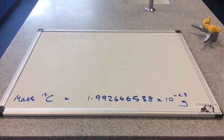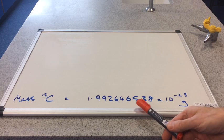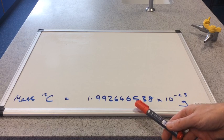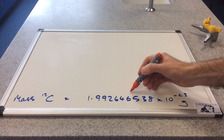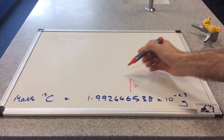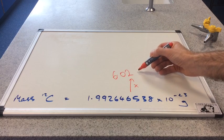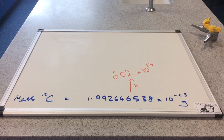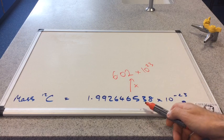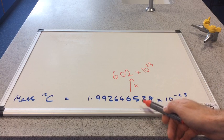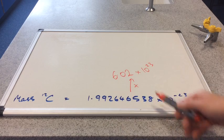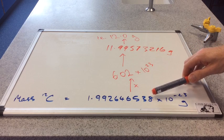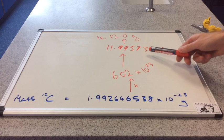So what scientists decided to do was they would scale this number up massively to end up with a number that was a lot more manageable to work with. And the number that they used to scale up, I'm sure you've come across, is this number here: 6.02 times 10 to the 23. I'll tell you what that number's called in a moment but let's just see what effect that has on this number here. So that's the mass of one carbon-12 atom and we're going to multiply this by this number.